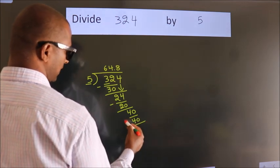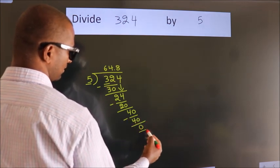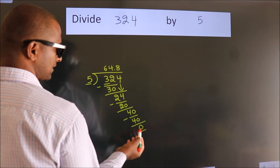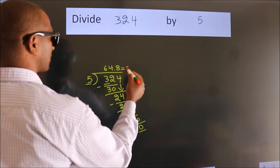Now we subtract. We get 0. We got remainder 0, so this is our quotient.